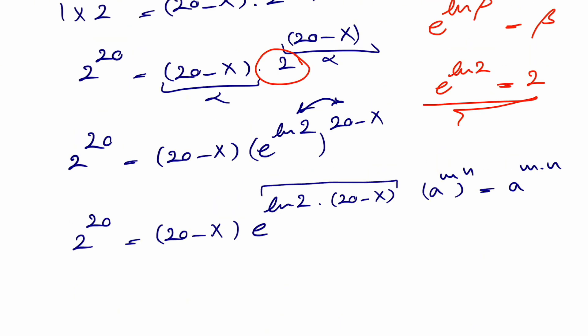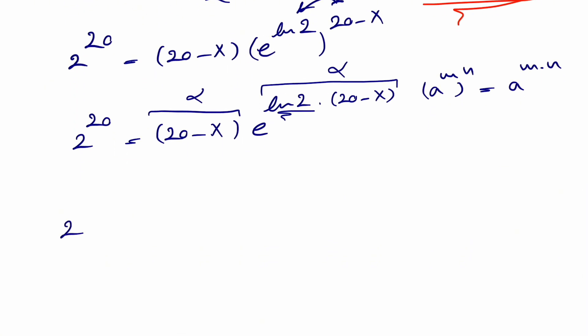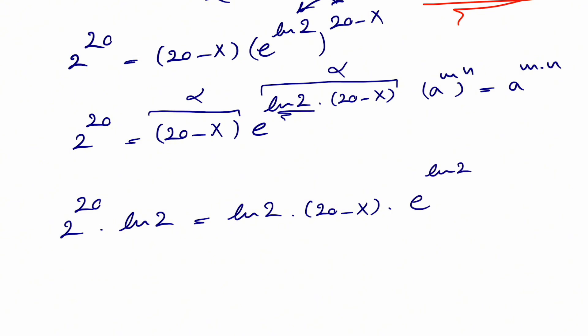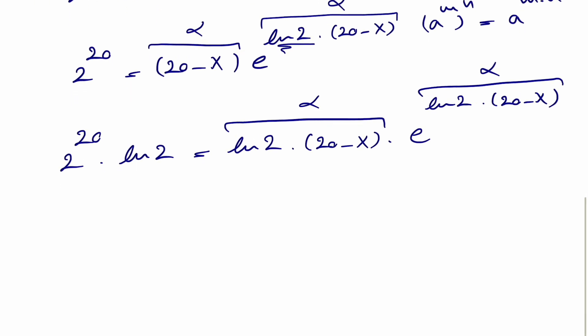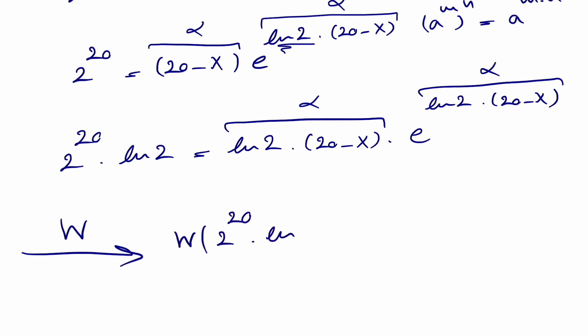Looking at the Lambert function form α·e^α, we notice that ln2 is missing as a factor on the left side. So we multiply both sides by ln2, giving us 2^20 · ln2 equals ln2·(20 minus x) times e^(ln2·(20 minus x)). Now we have a perfect alpha structure, and we apply the Lambert W function to both sides.